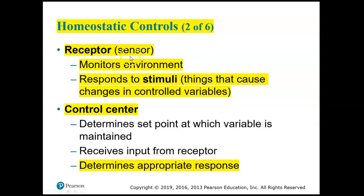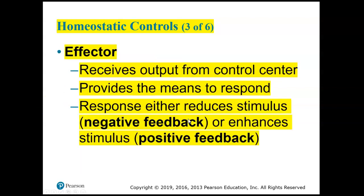The receptor is the sensor that monitors the environment and responds to stimuli, which are things that cause changes in the variables. The control center determines the appropriate response — that's typically the brain, the spinal cord, or a combination — your central nervous system, in other words.